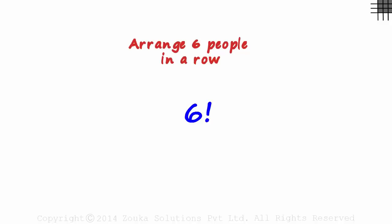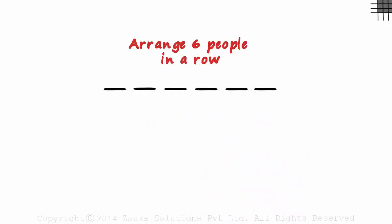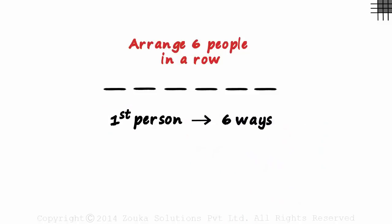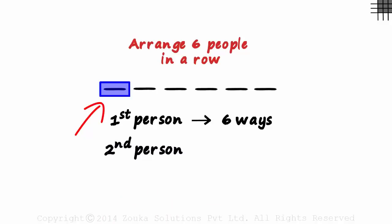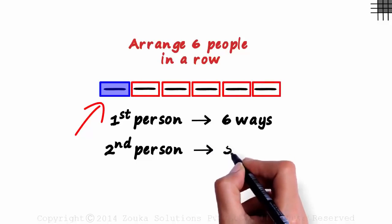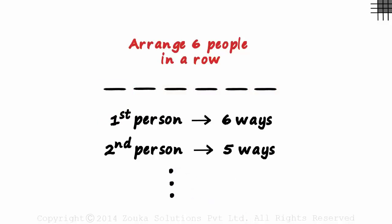First, we need to know the number of ways in which we can arrange six people in a row. We know it's six factorial. But do you remember how we arrived at it? We had made six slots for the six people, and the first question we asked was: in how many different ways can the first person be seated? He can be seated in any one of these six slots, and each slot is different from the other, so the first person can be seated in six ways. As one slot is taken, just five remain for the second person. This goes on and we get the answer as six factorial.